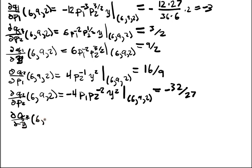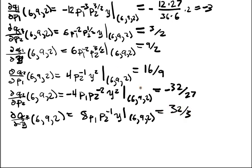And DQ2/DY evaluate at 6, 9, 2 is equal to 8P1 P2 inverse Y. Evaluate at 6, 9, 2 should yield 32/3.